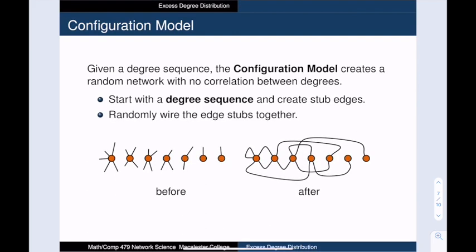Let's talk about a process that creates a network with uncorrelated degrees. Here is the configuration model. We start with a desired degree sequence. We then create vertices with the appropriate number of edge stubs. Then we randomly wire these edge stubs together, and during this process the pairing of edges is entirely random.